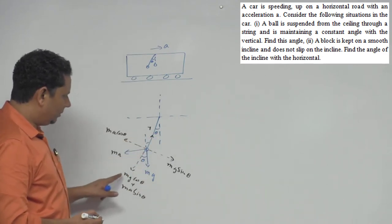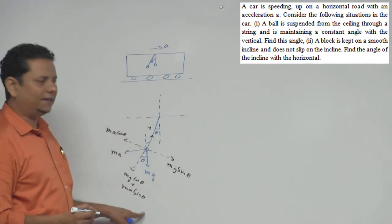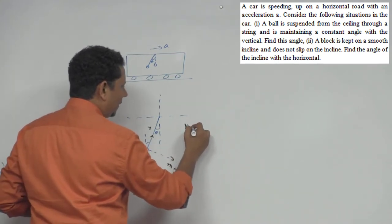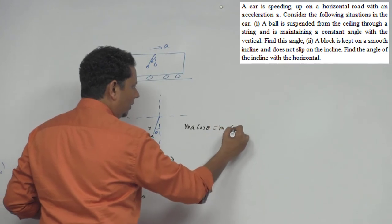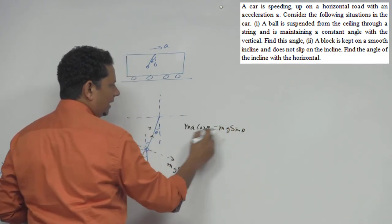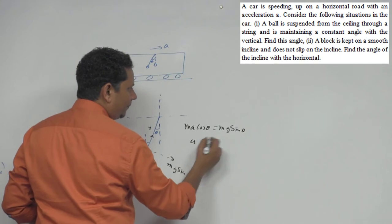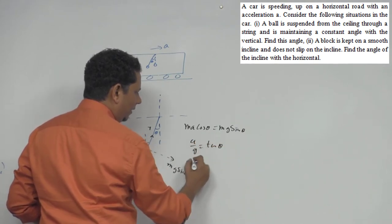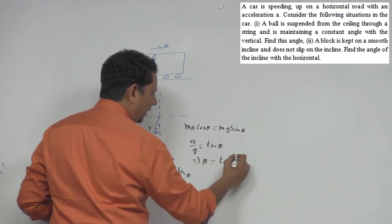If you ask for tension in this string, it will be equal to mg cos theta plus ma sin theta. Now in this direction we can write: ma cos theta will be equal to mg sin theta, which implies m cancels, a divided by g will be equal to tan theta, which implies theta will be equal to tan inverse a by g.